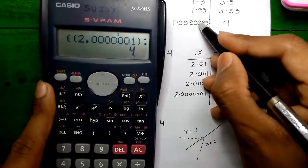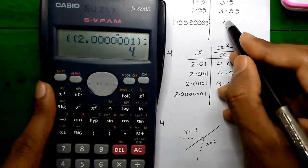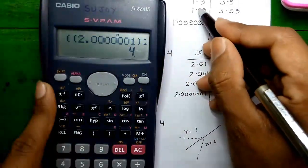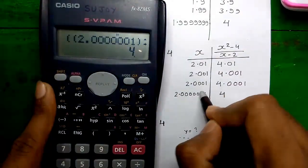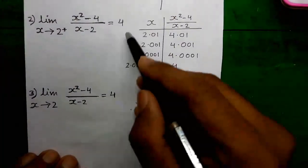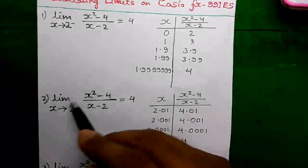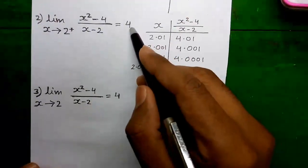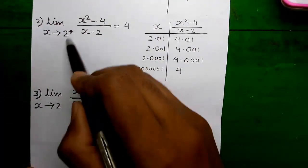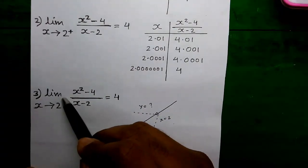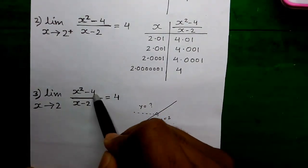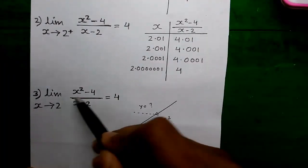The value of the limit is 4 for two extremely close values to 2 — one below 2 and one above 2. Since the left-hand side limit and the right-hand side limit are both equal to 4 for values very close to 2, we can approximately say the value of this limit is equal to 4 at x equals to 2.